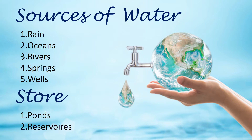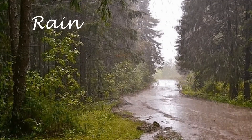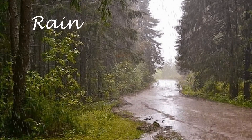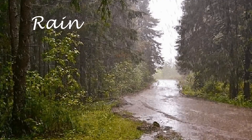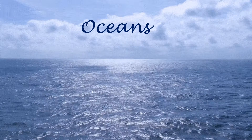The sources of water — that is, from where do we get water — are: rain, oceans, rivers, springs, and wells. How do we store water? There are two points here: ponds and reservoirs. We will be studying about each source one by one. First is rain. Rain is the main source of water and plays a major role in storing fresh water on the earth.